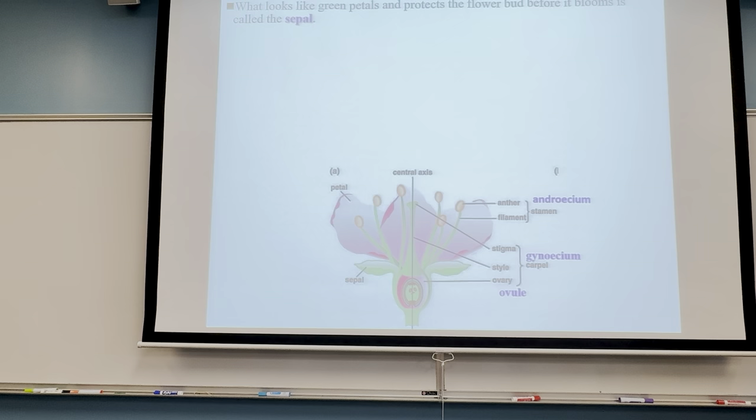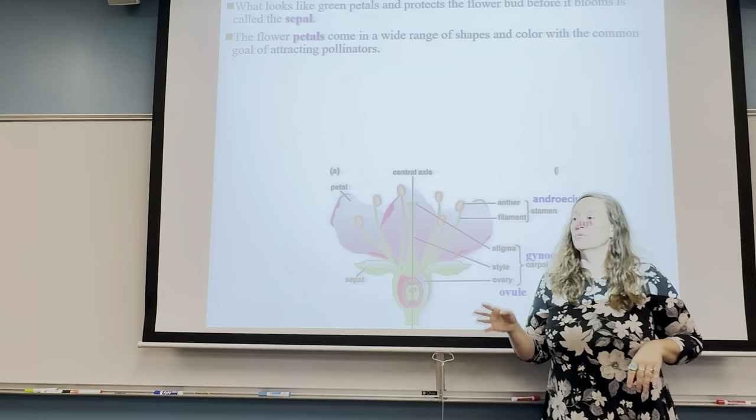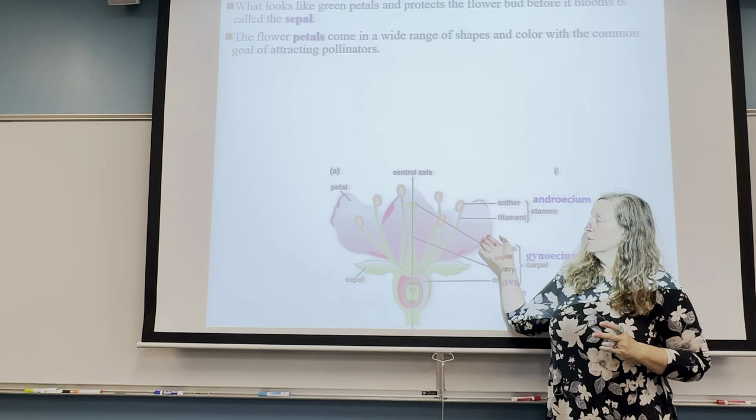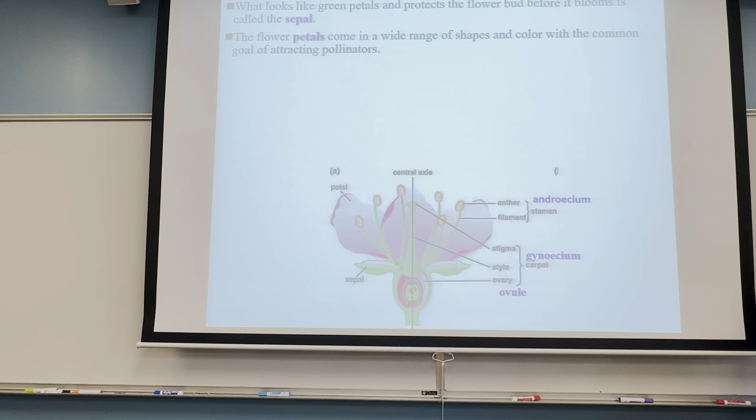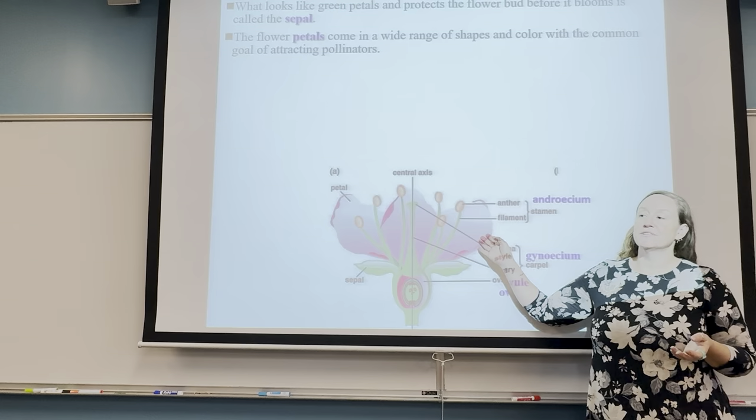The petals are a very important part of helping with fertilization in plants. When we're talking about plants, we refer to this process as pollination. The different colors, shapes, and smells of petals attract a pollinator — we'll get to pollinators in just a second.